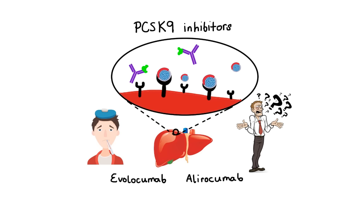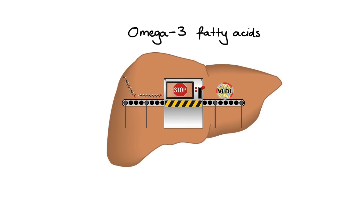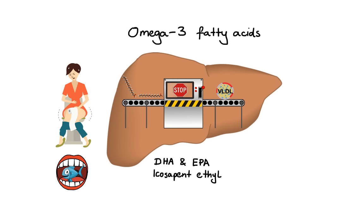The last major group of lipid-lowering drugs is omega-3 fatty acids. These are used primarily for their triglyceride-lowering effects, which are thought to be caused by inhibition of VLDL and triglyceride synthesis in the liver. The agents in this class are the components of omega-3 fatty acids called docosahexaenoic acid (DHA) and eicosapentaenoic acid (EPA), as well as the omega-3 derivative icosapent ethyl. The most common side effects are GI disturbances such as abdominal pain, nausea, and diarrhea, as well as a fishy aftertaste with fish-derived omega-3s. At high enough doses, there appears to be some increased risk of bleeding.